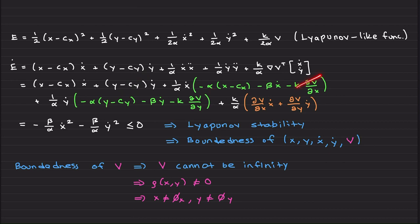At the end of the day, you have this nice simple form: β over α multiplied by ẋ² and β over α ẏ² less than or equal to zero. We cannot say asymptotic stability—this means we have Lyapunov stability, which says boundedness of x, y, ẋ, ẏ, and V.